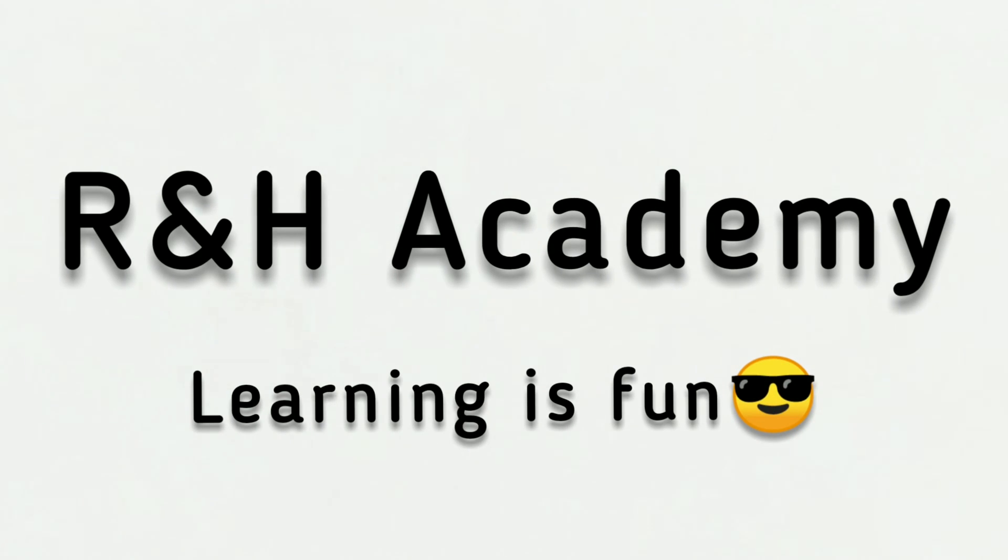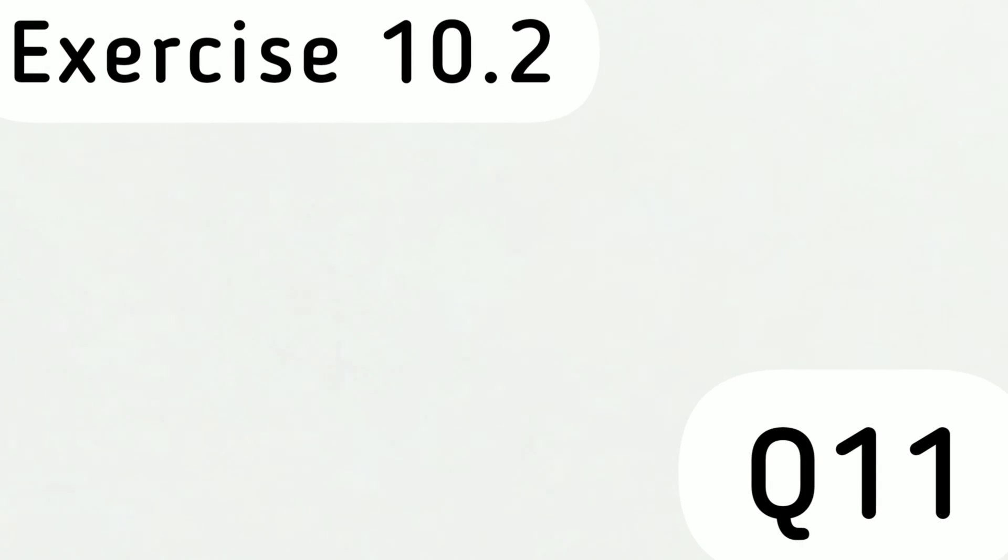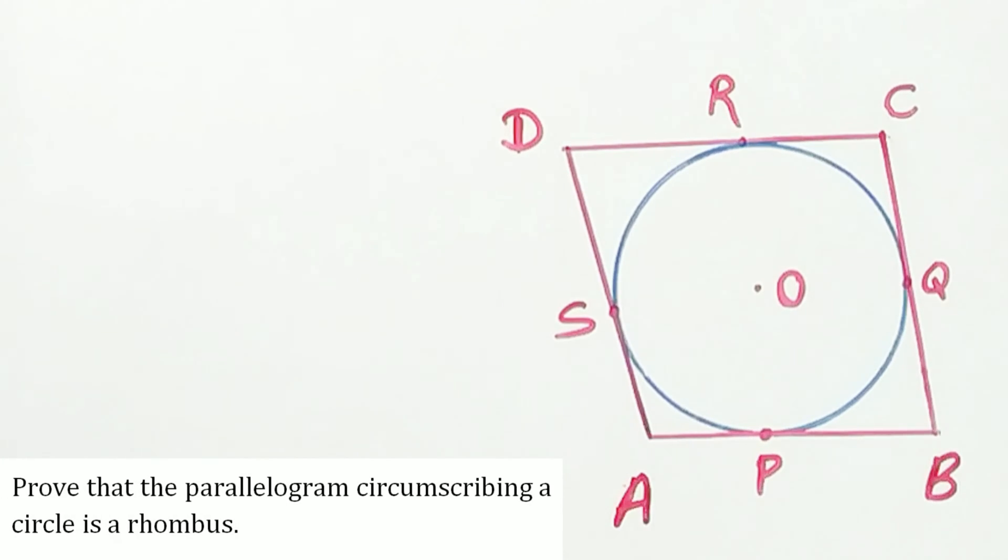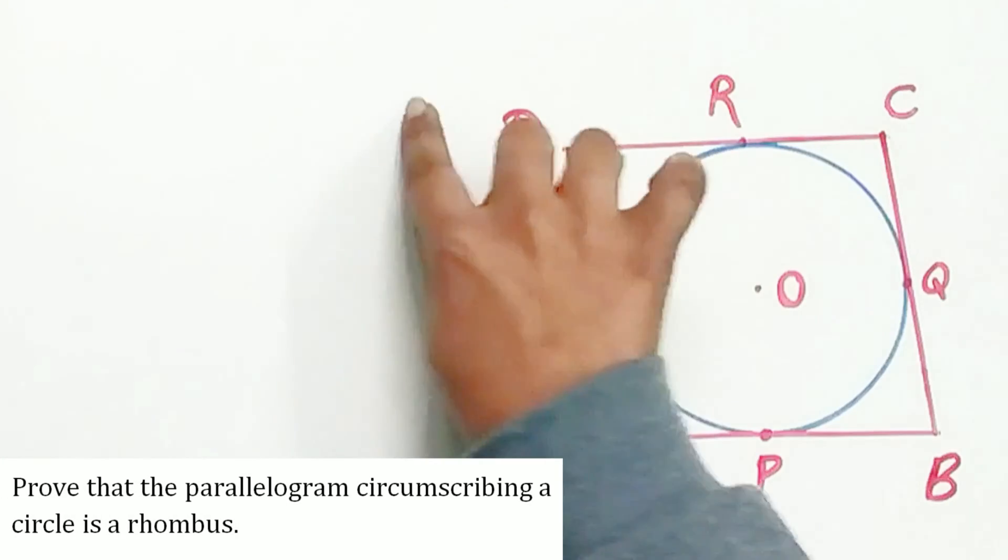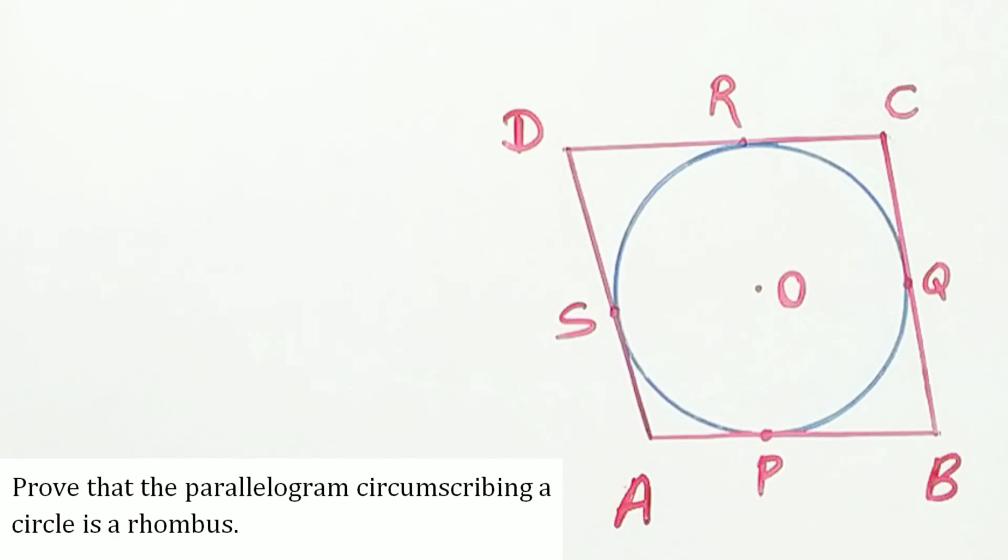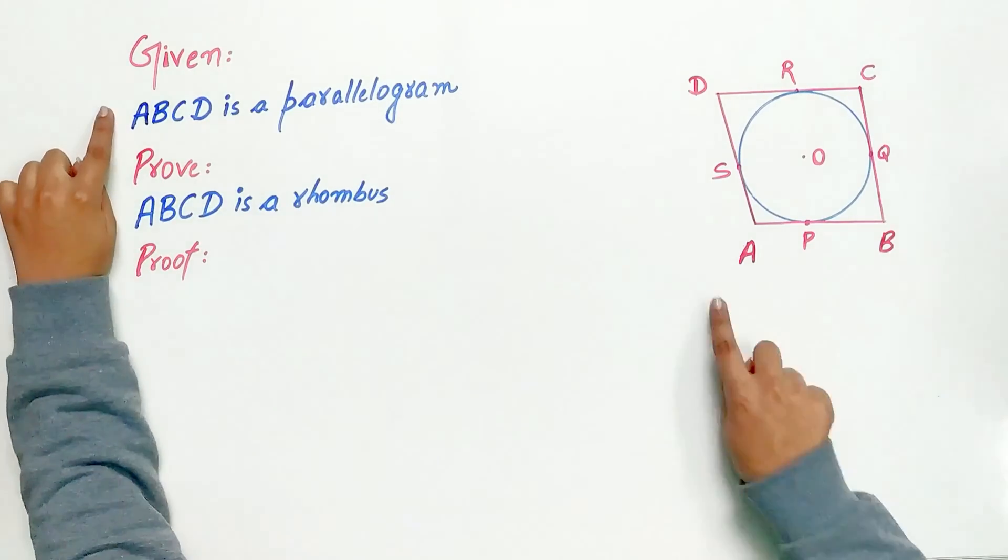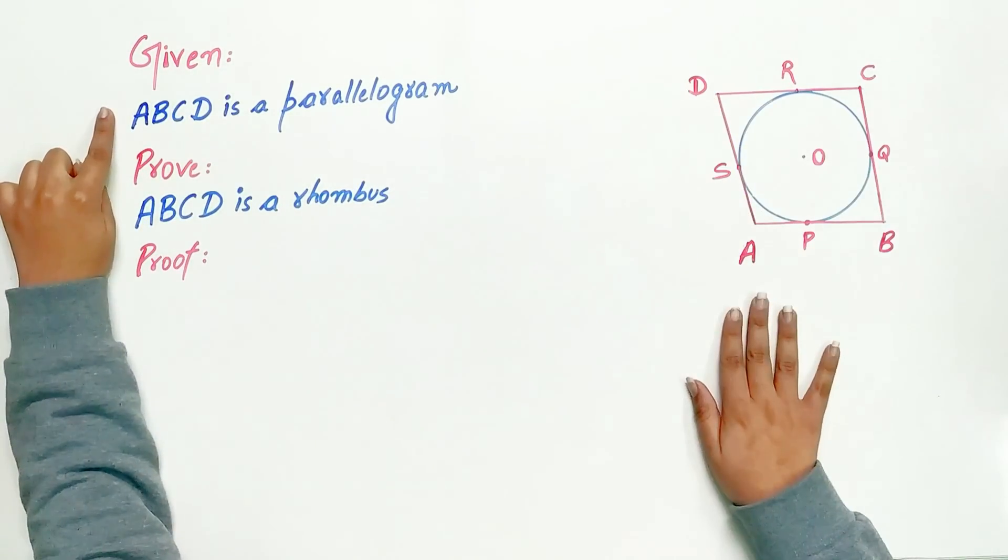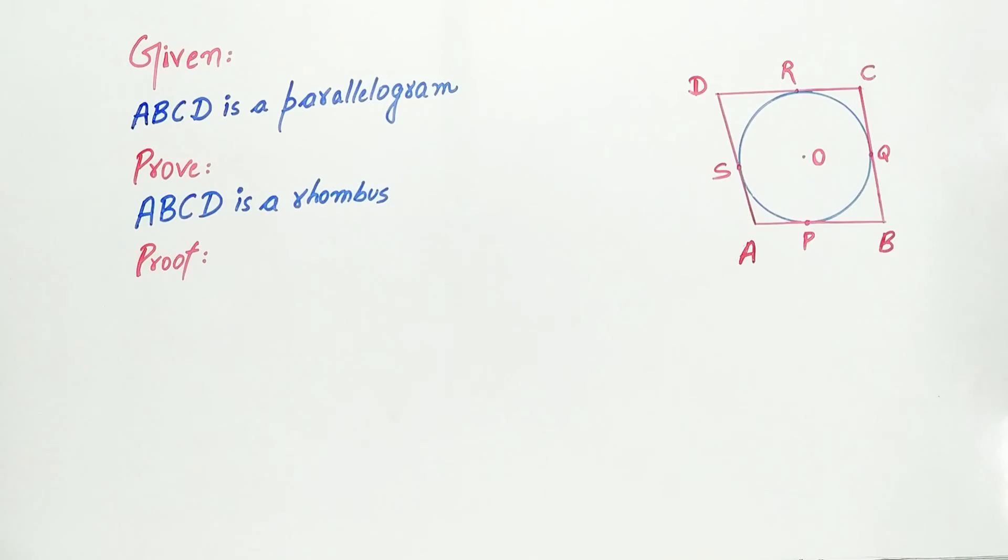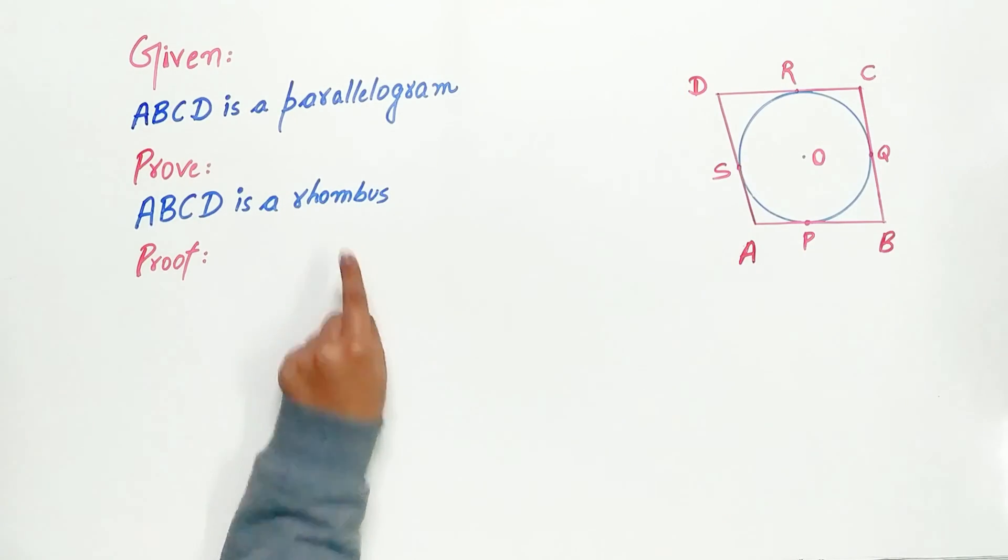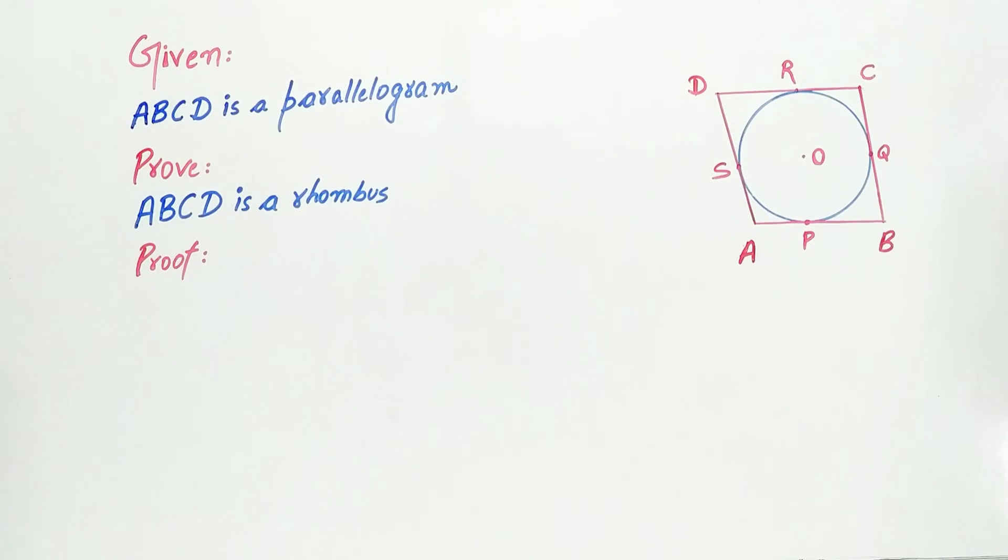Welcome to R&H Academy channel. Question 11 of exercise 10.2 says to prove that the parallelogram circumscribing a circle is a rhombus. Hence, it is given to us ABCD is a parallelogram. We have to prove that ABCD is a rhombus, and a rhombus has all the sides equal. Let's do it.